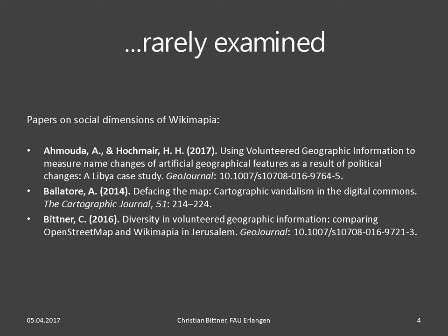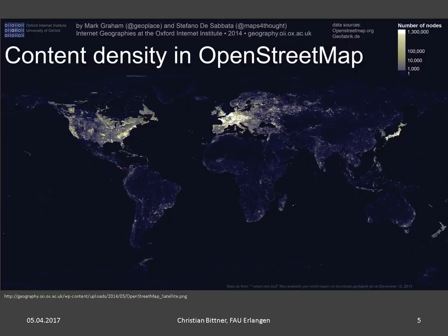During the last weeks, I've been trying to find out something about the geographic biases in Wikimapia data, because I always thought it would be nice to have something like the OSM density map — but for Wikimapia. Many of you have probably seen this great map made by Mark Graham and Stefano de Sabata. It shows differences in content density of OpenStreetMap and is a very strong visual proof of socio-economic inequalities in the data. We have glowing hotspots in Europe, the US, and Japan, while large parts of the global south remain in darkness.